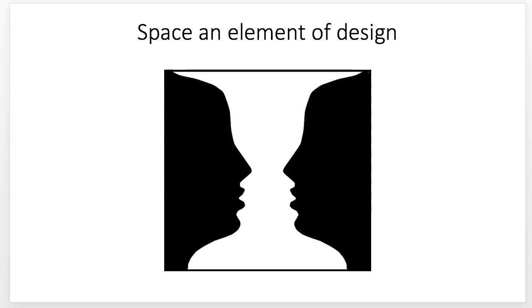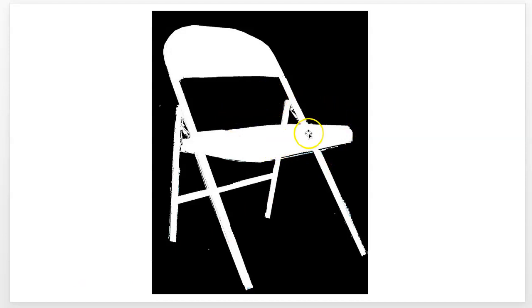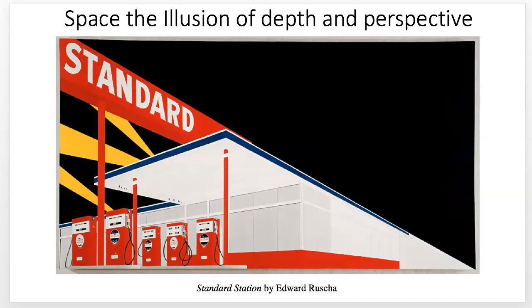Sometimes people use this to mess with visual gestalt — this is the classic vase-versus-two-faces example. Your eye moves back and forth; some people can't see one or the other. Space is also an element, very much connected to shape. This is the actual positive image — the shape is the white, the black is the negative space, but someone created it by filling in the negative space. This is Kara Walker's work with silhouettes about race and identity.